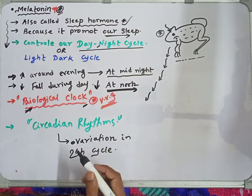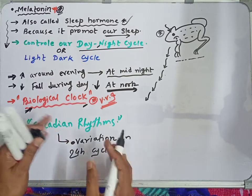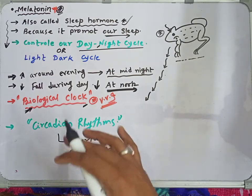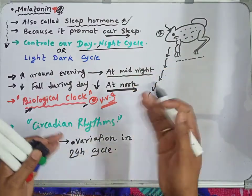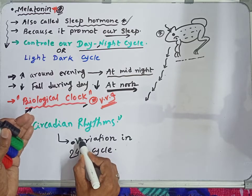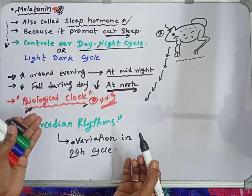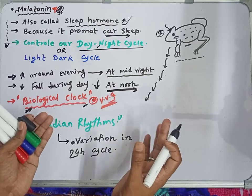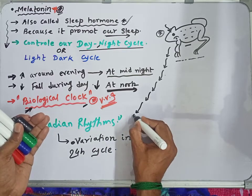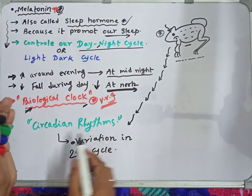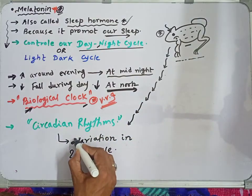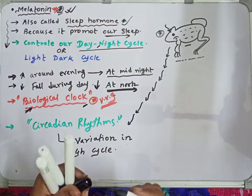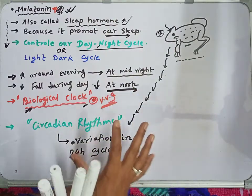The variation of the circadian rhythm — for example, being active during the day and sleeping at night — did not happen in just one or two years. Our ancestors practiced this for millions and lakhs of years, forming this habit. We could have been nocturnal like frogs, bats, or owls, but our circadian clock's setting is different. The pineal gland decides this.